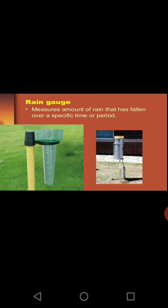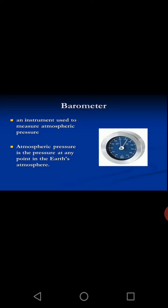Rain gauge measures how much rainfall is received. We calculate it in centimeters — jars or measuring containers are kept on an open surface, and whatever rainfall is collected tells us how much rainfall that particular region received in a given time period. Barometer is an instrument that measures atmospheric pressure, also called wind pressure — an important element for deciding about rainfall, cloudy weather, or clear sky.